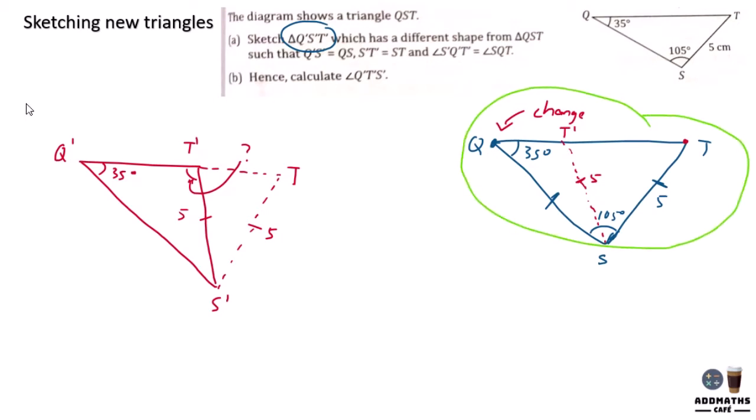This then will be 180 minus 105 minus 35, which will give you an answer of 40 degrees. Which will contribute that this angle and this angle is 40 and 40.